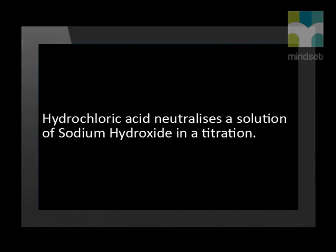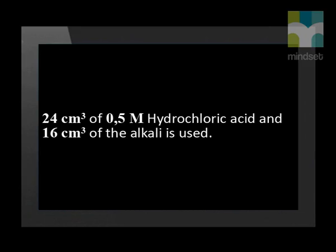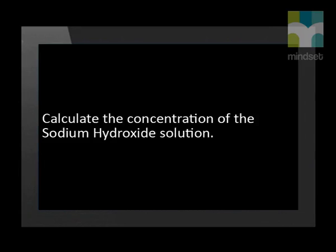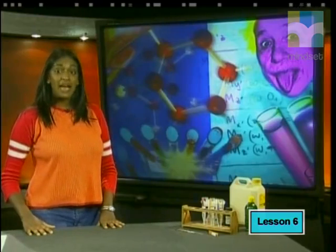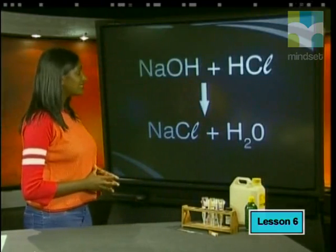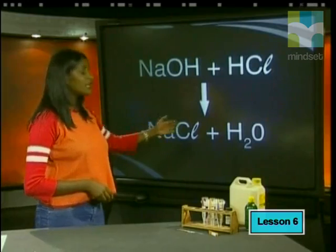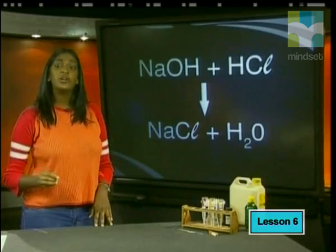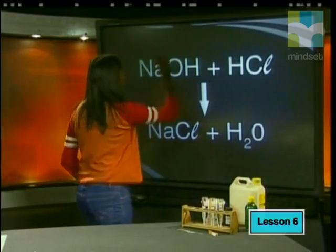Let us see how a titration could be applied in solving real problems. Hydrochloric acid neutralizes a solution of sodium hydroxide in a titration. 24 cm³ of 0.5 mol/dm³ hydrochloric acid and 16 cm³ of the alkali is used. Calculate the concentration of the sodium hydroxide solution. Step 1: write a balanced chemical equation. Sodium hydroxide plus hydrochloric acid react to form sodium chloride plus water. Step 2: show the ratio of moles reacting, which is 1 to 1.